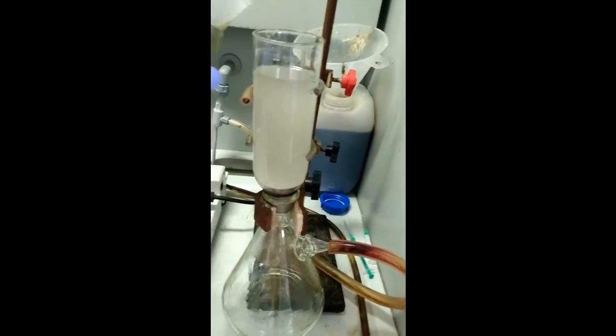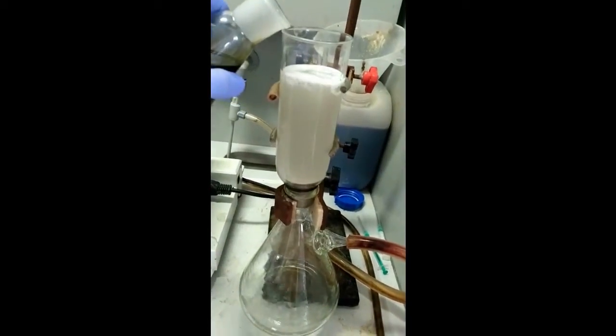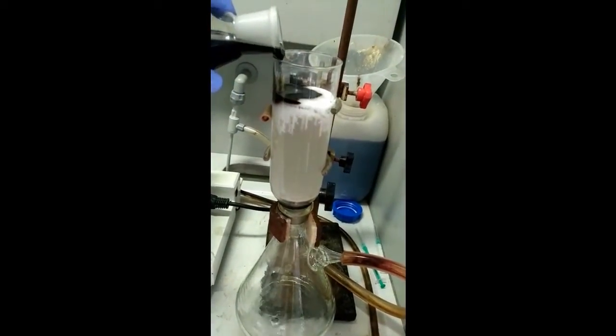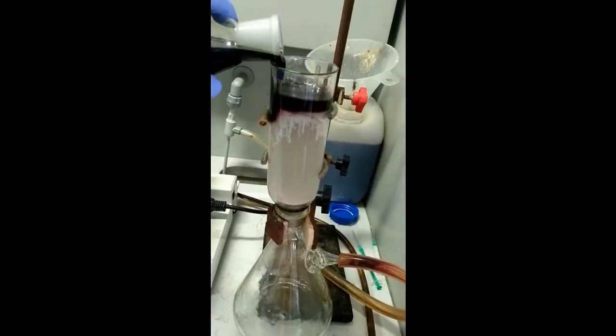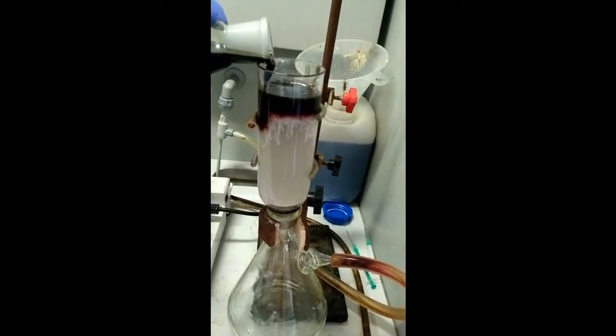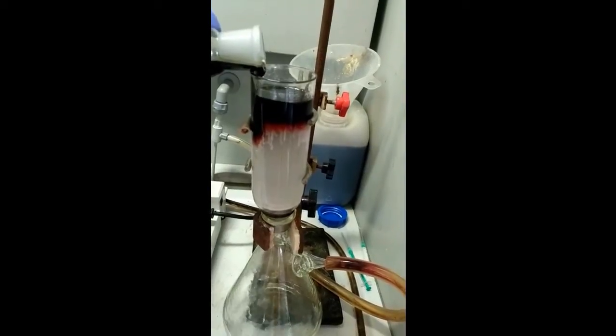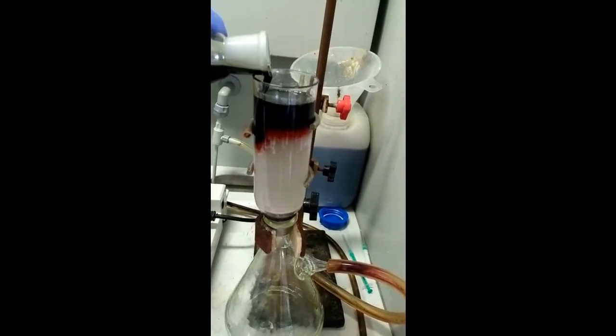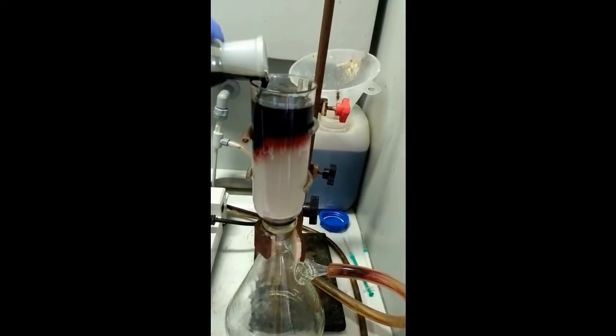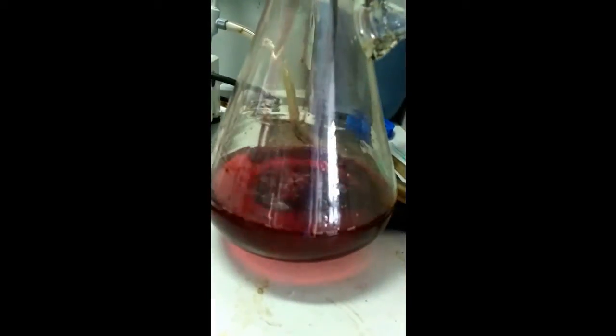The reaction is purified using silica gel plug with dichloromethane as an eluent. As you can see, the greenish mixture contains reddish porphyrin. You can see it now.